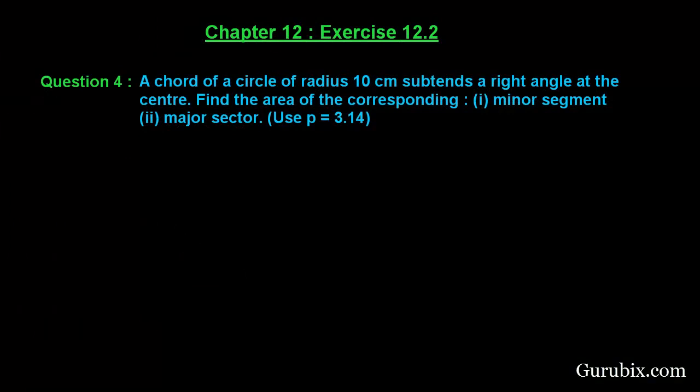Welcome friends. Let us solve question number four of exercise 12.2 of chapter 12. The question says: a chord of a circle of radius 10 centimeters subtends a right angle at the center. Find the area of the corresponding minor segment and major sector. Use pi equals 3.14. This is a very important question — let us solve it.